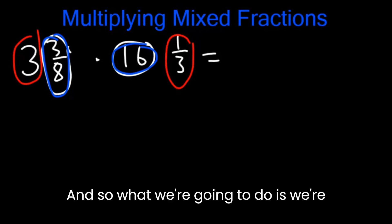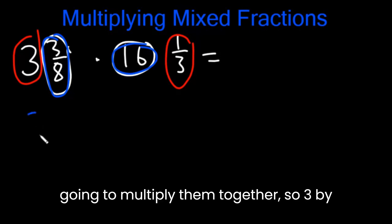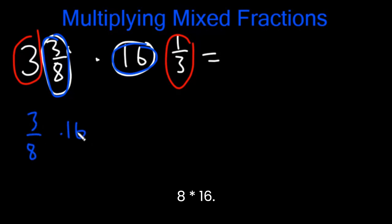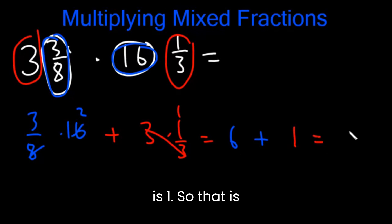And so, what we're going to do is we're going to multiply them together. So 3/8 times 16 and then you can add it to 3 times 1/3. So this is going to be equal to, the blue part is 6 plus this is 1. So that is 7.